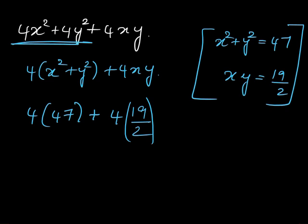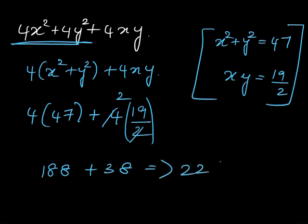Now simplification: 4 into 47 gives 188, plus 4 and 2 cancel leaving 2 into 19 which is 38. When you add these two numbers you get the answer as 226.